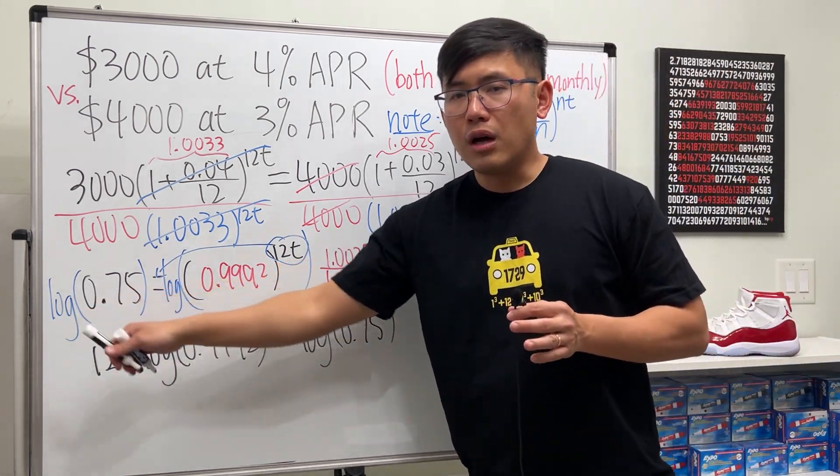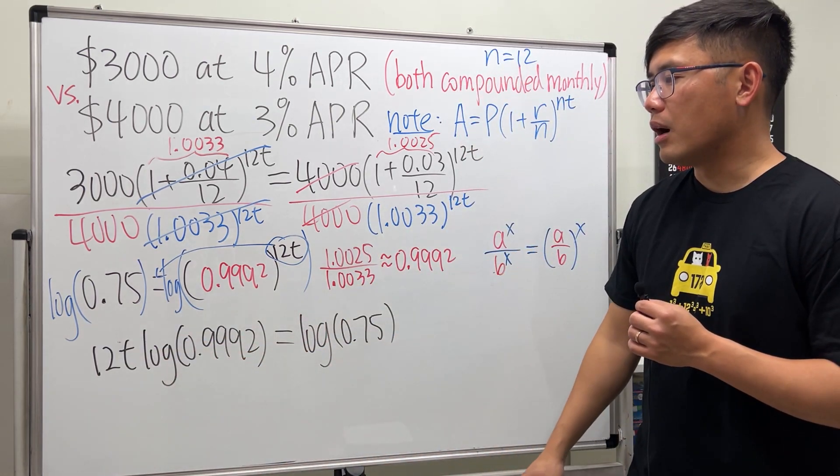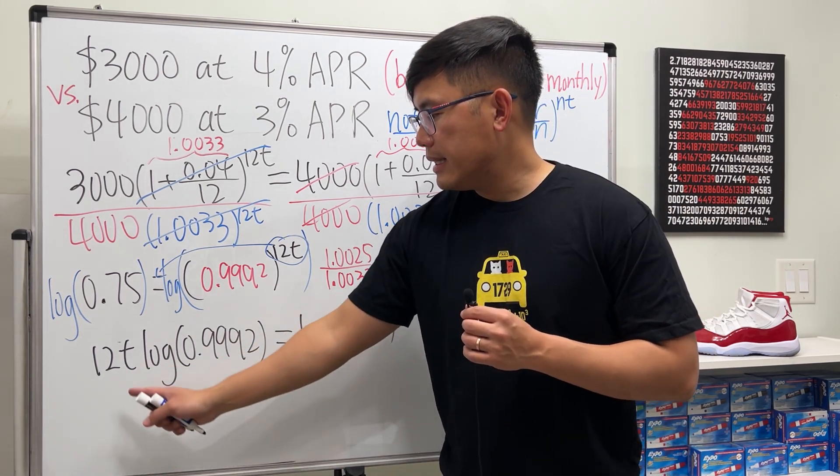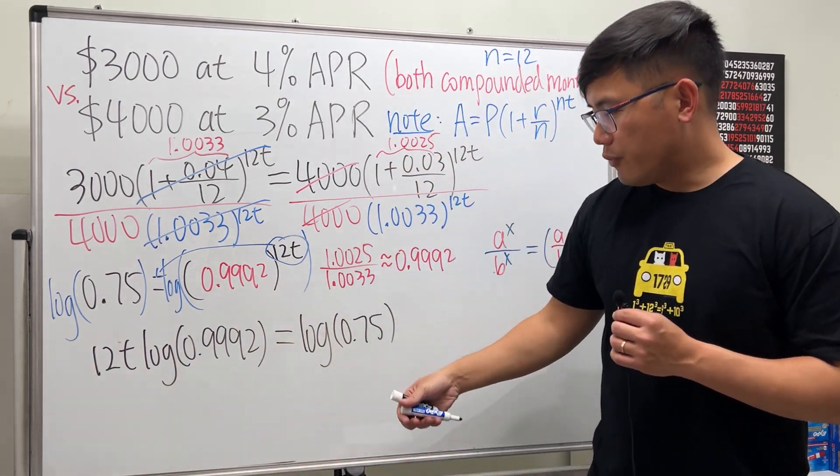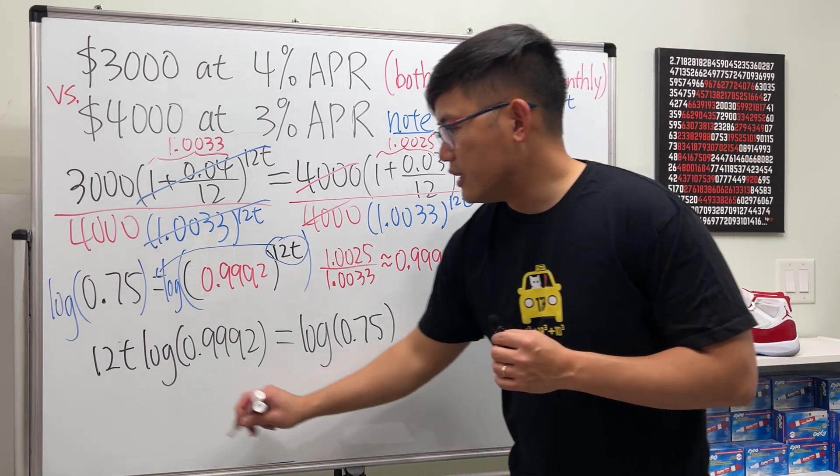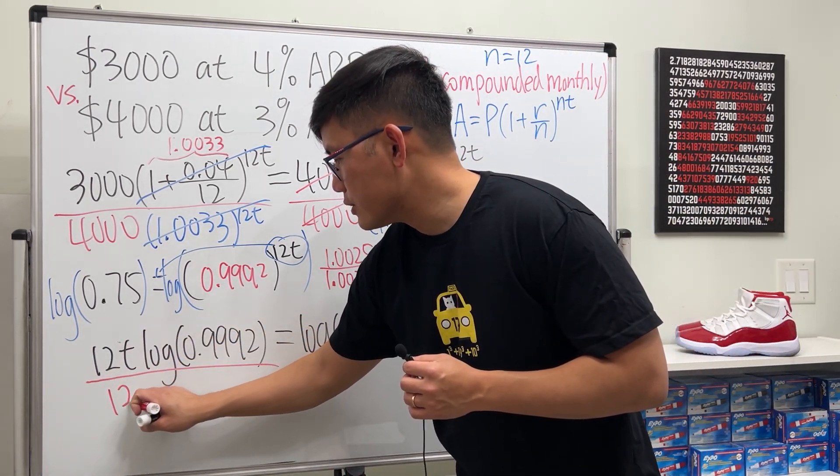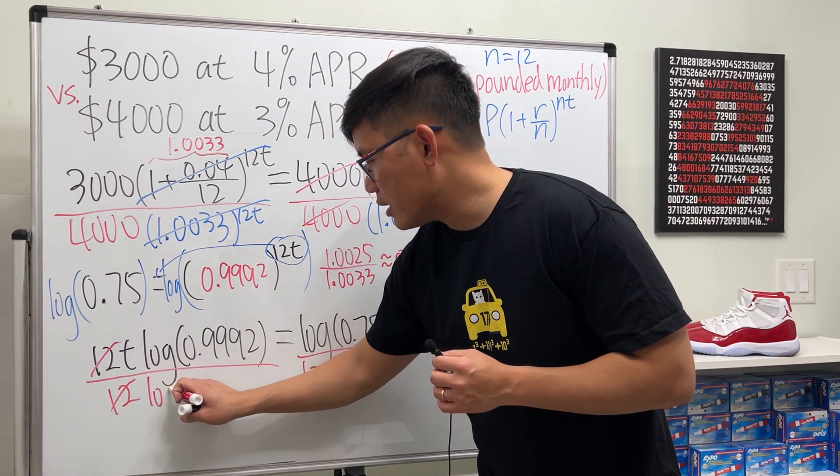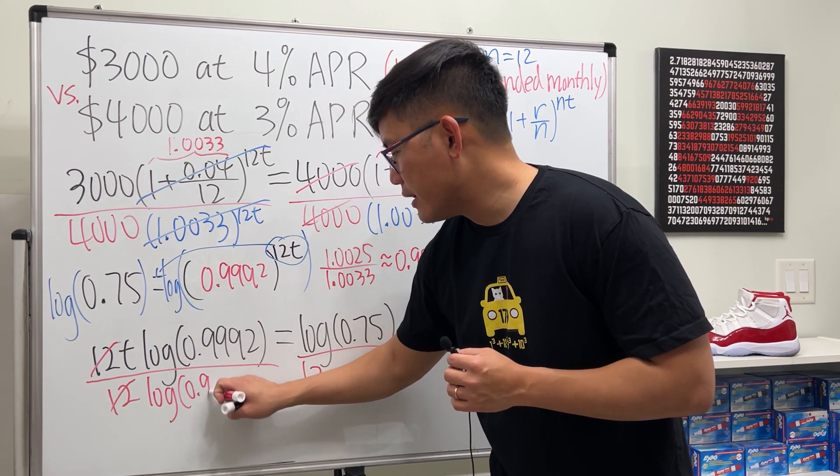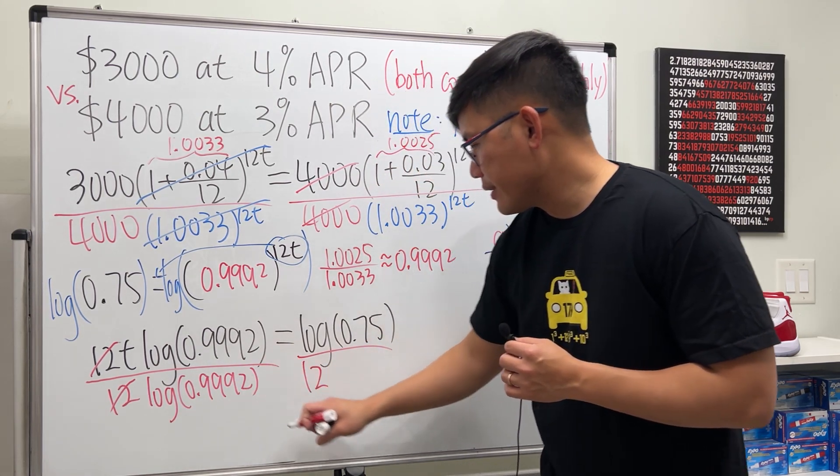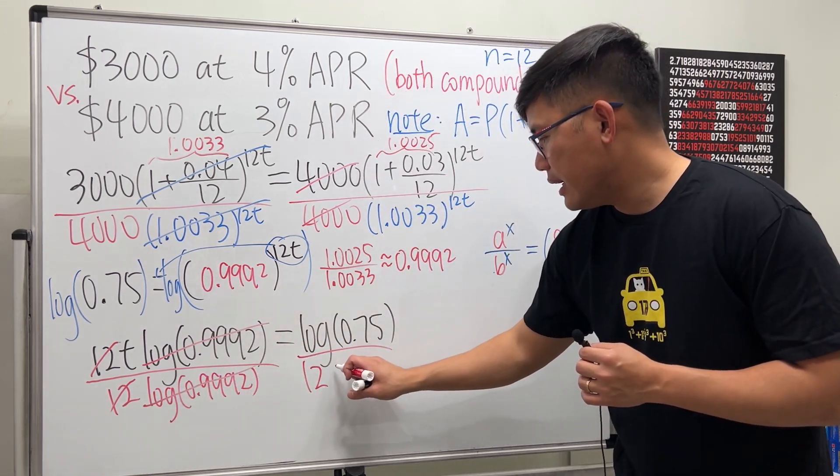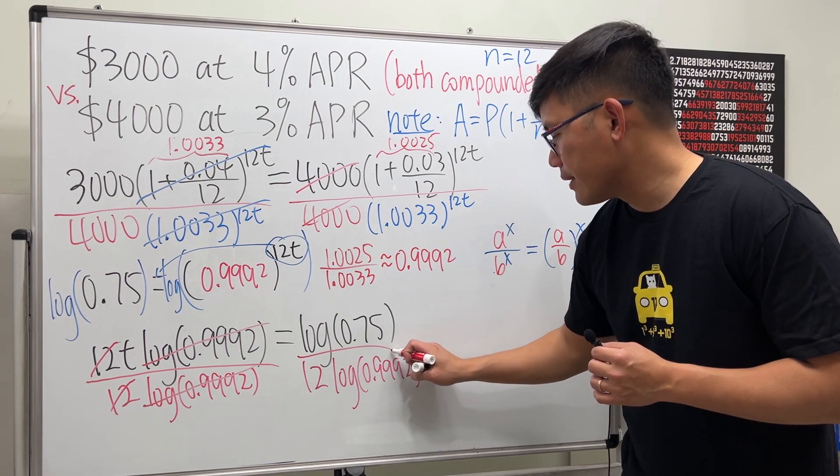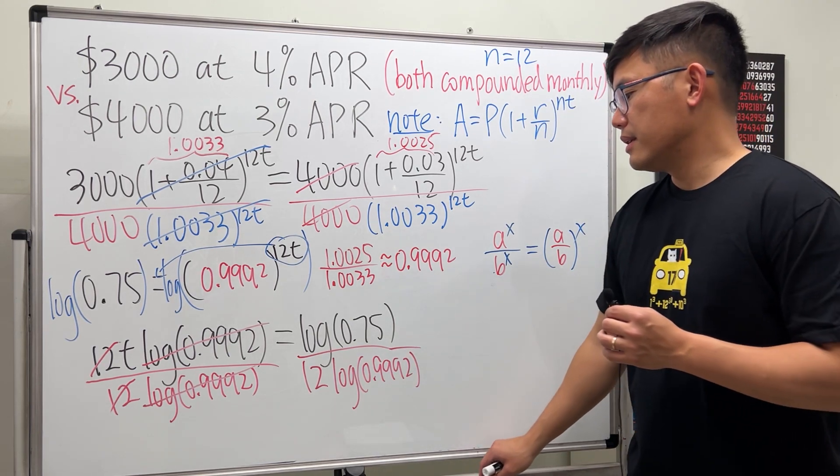If you want to use natural log, that's totally okay, just make sure you have the same log on both sides. Here, t is being multiplied by 12 and this number, therefore all we have to do is divide both sides by 12 and also by log(0.9992) so that these cancel. Here we have t = log(0.75) / [12 × log(0.9992)].